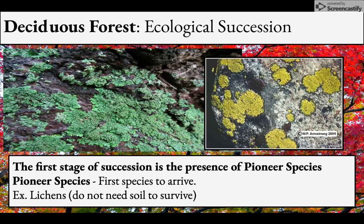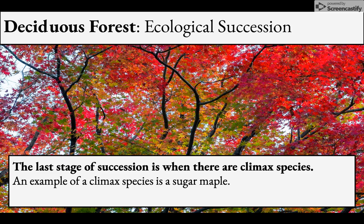Pioneer species are the first species to arrive. They're typically species that don't need much soil to survive — like lichens. In primary succession, such as on the sides of a volcano, lichens start growing first, and this slowly transitions to grasses, small plants, then trees and larger trees. Climax species represent the last stage of succession, when you have a mature area — an example being the sugar maple in the deciduous forest.